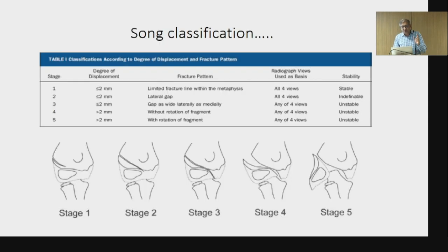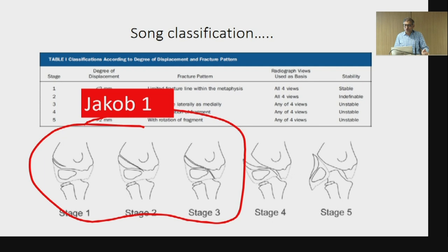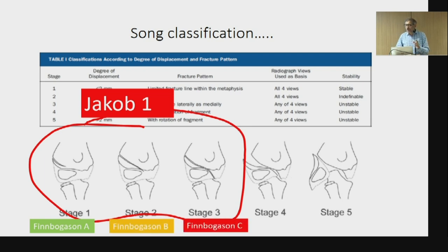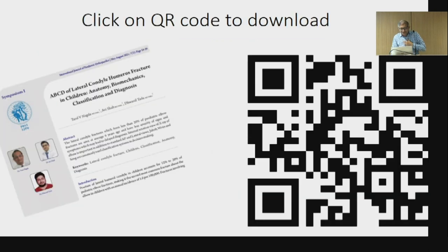Song's classification, which is very famous, was exactly like Hindi remix music directors — he took Jacob's classification and Finn-Borgeson's classification, mixed the two, and created his own recipe called Song's classification, which we admire so much, but it was nothing more than mixing two classifications and creating his own track. Based on this, we have written a small article in the International Journal of Pediatric Orthopedics — those of you with phones can scan the QR code to download the article and know what these classification systems are all about.